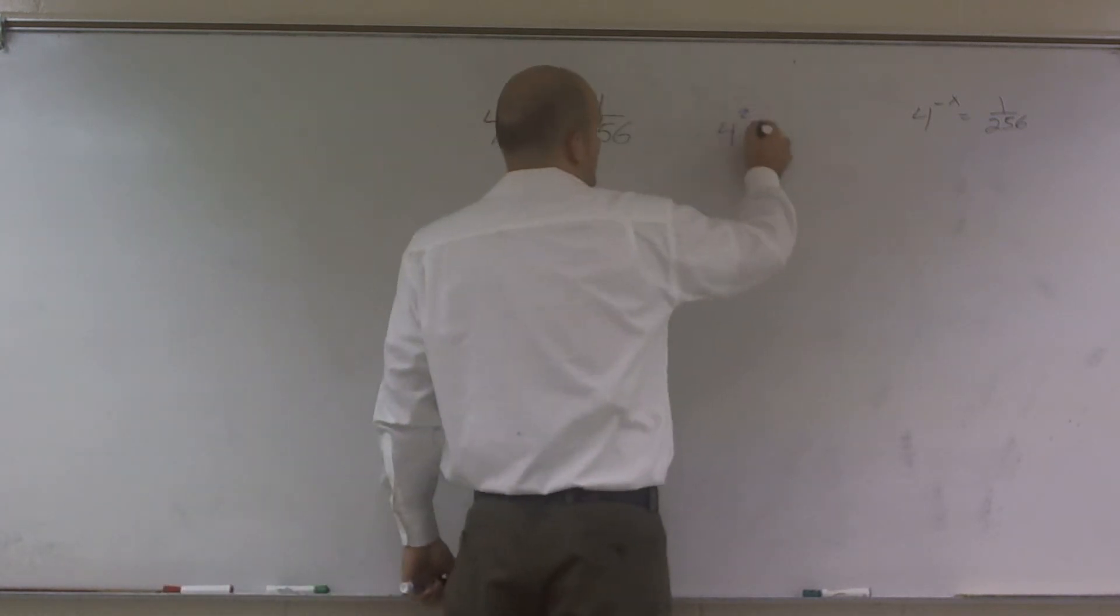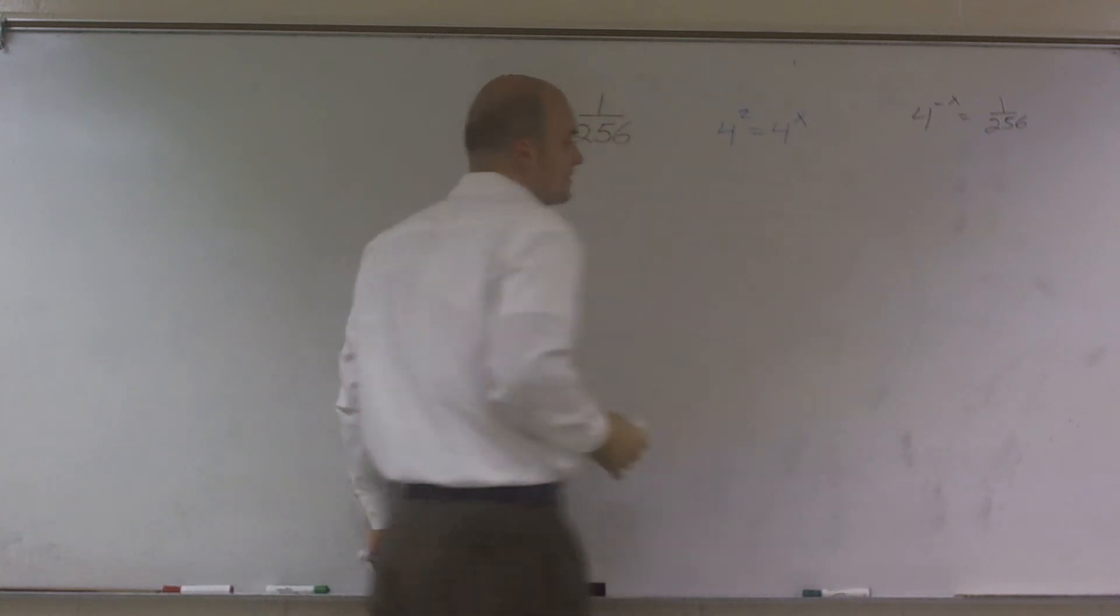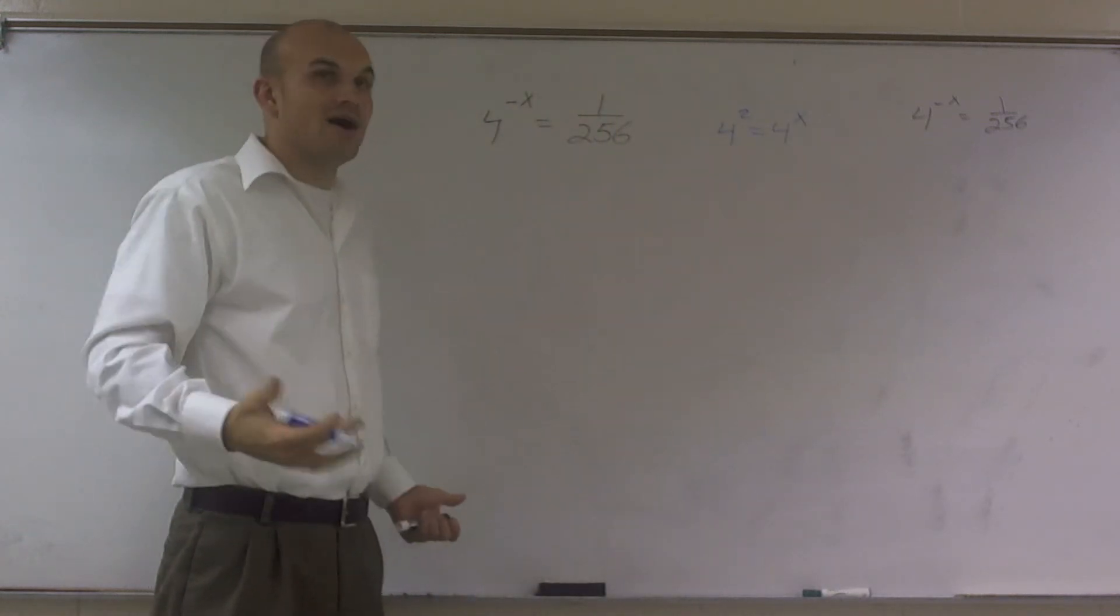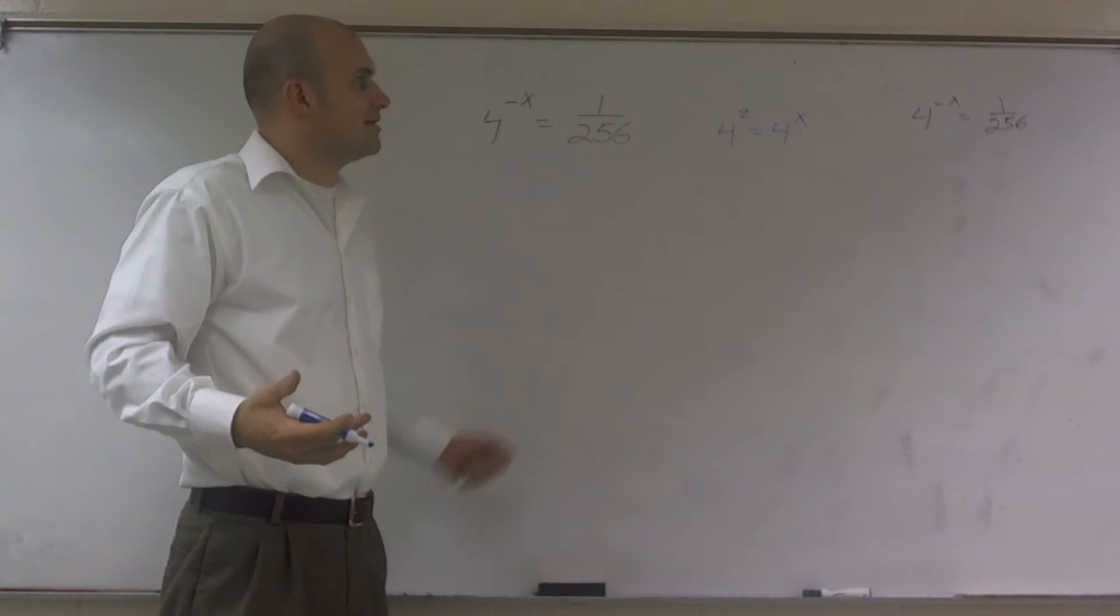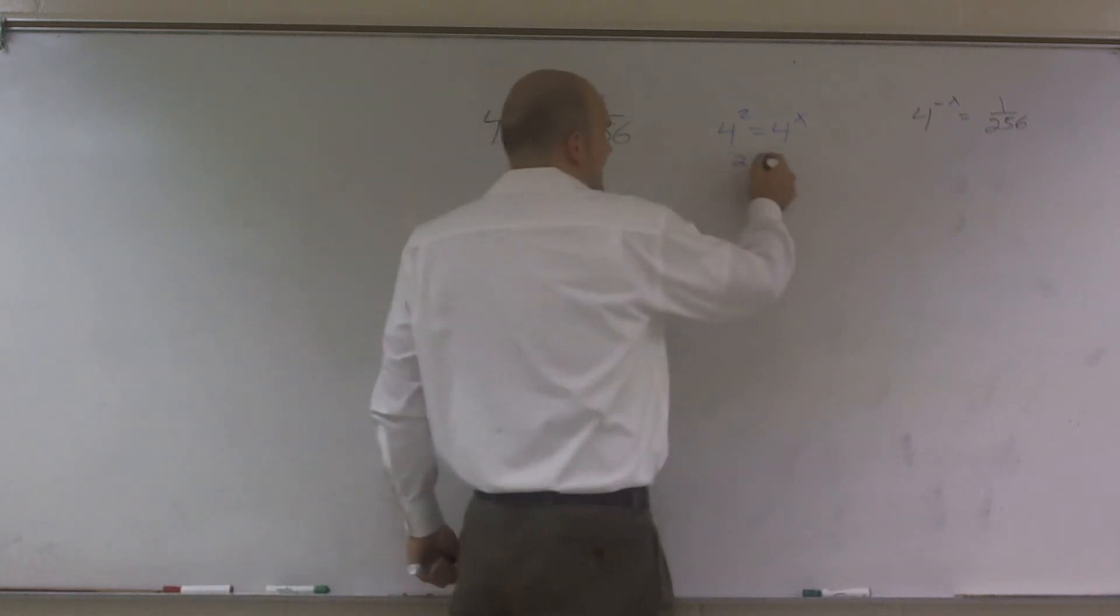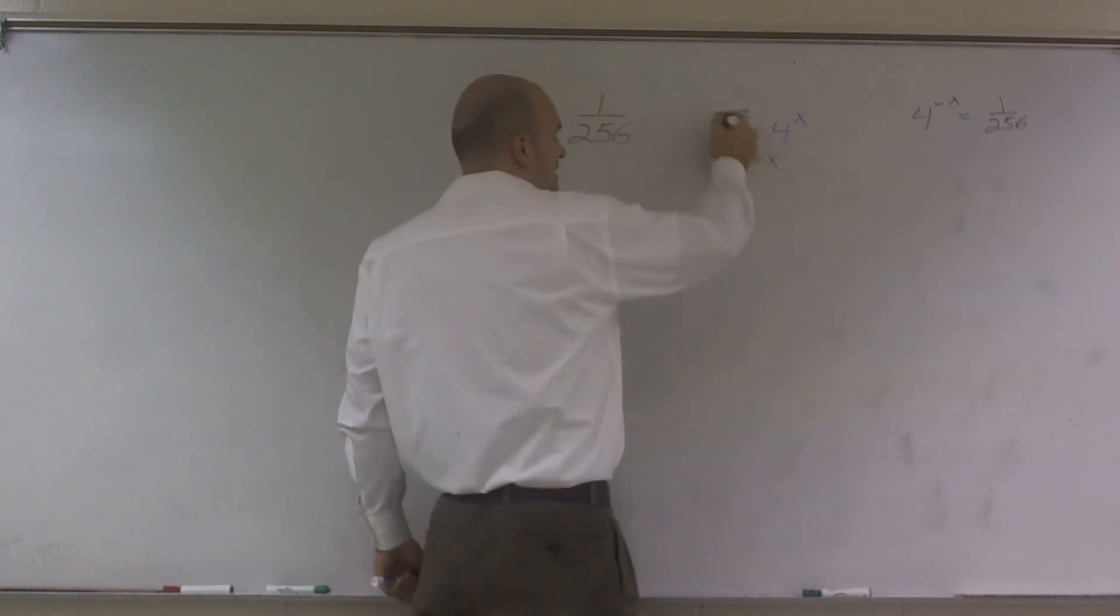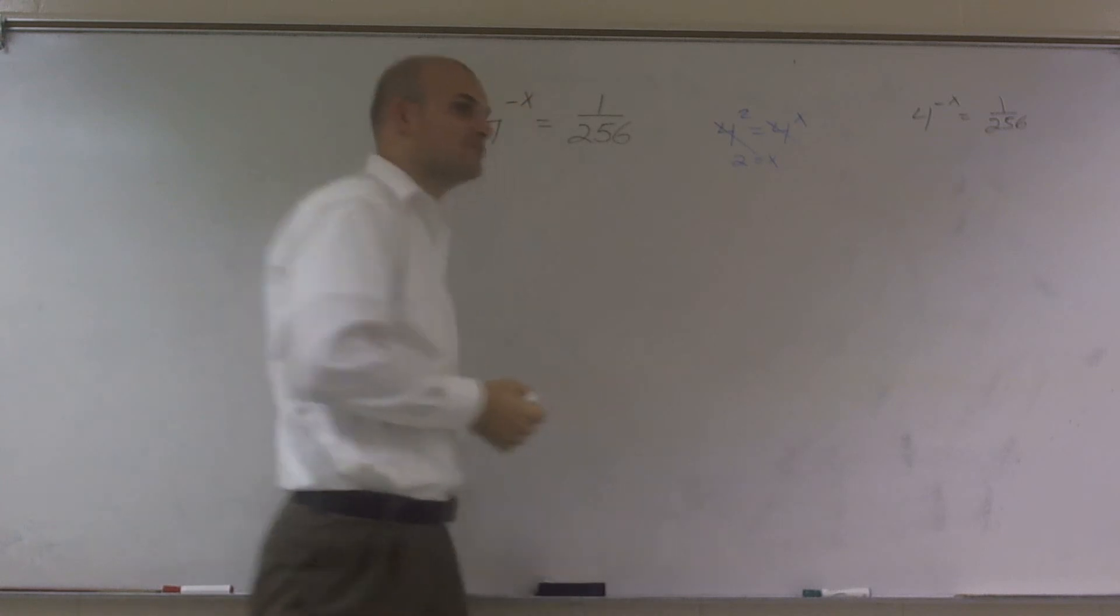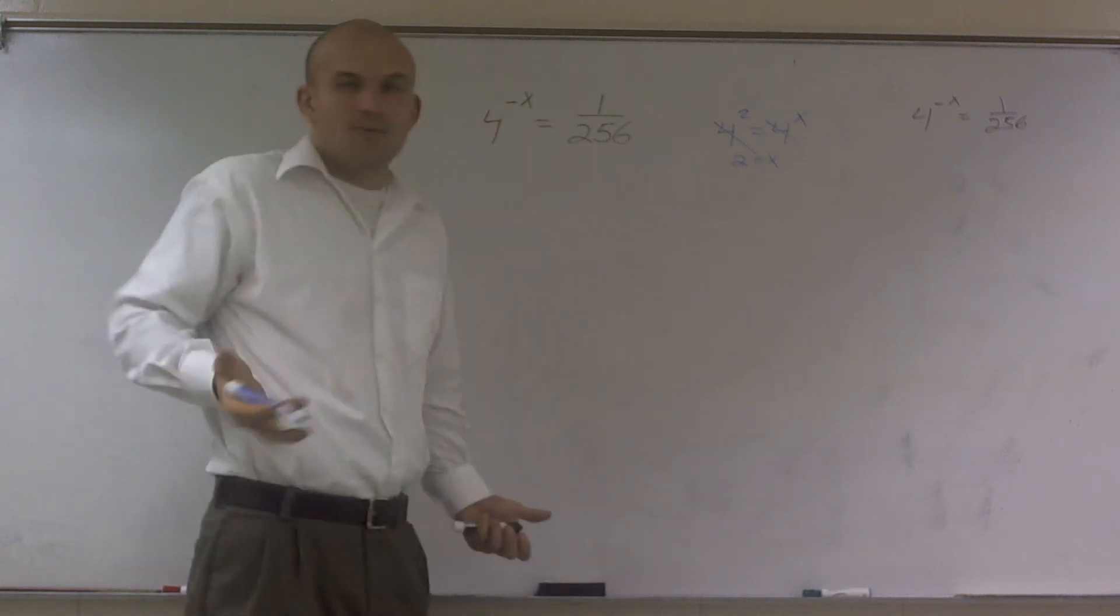Because if you guys remember, if I have 4 squared equals 4 to the x, well that's awesome. I know that 2 has to equal x. So what I essentially do is I can cancel out my two bases.